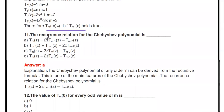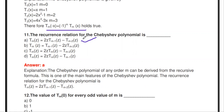The recurrence relation for the Chebyshev polynomial is: Tₘ(z) = 2z · Tₘ₋₁(z) − Tₘ₋₂(z). That is, Tₘ(z) is obtained by 2z multiplied with Tₘ₋₁(z) minus Tₘ₋₂(z).